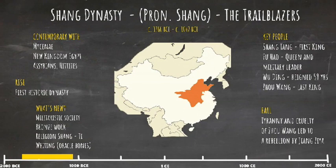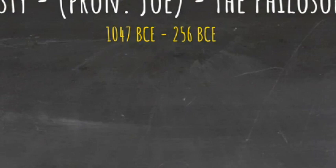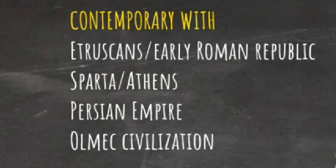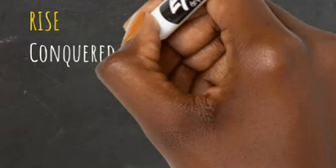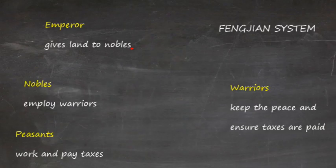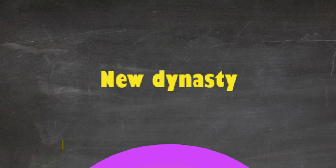The Zhou dynasty ruled for nearly 800 years, from 1047 BCE to 256 BCE, and expanded Chinese territory. Ruling for such a long time, they were contemporaneous with many civilizations, including the Etruscans, the early Roman Republic, the city-states of Sparta and Athens, the Persian Empire, and the Olmec civilization in South America. They conquered the Shang from their power base in modern Shaanxi province and introduced the Fengjian system, akin to feudalism in Europe. They also introduced the concept of the Mandate of Heaven, a principle that justified the divinely granted rule of emperors, and also said that if they were overthrown, that was the will of God.